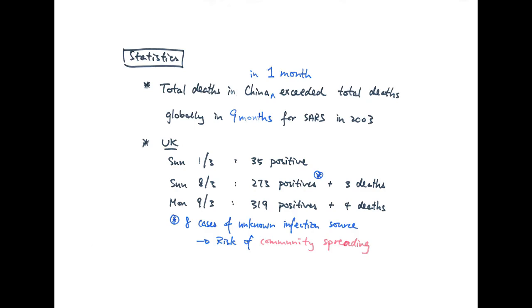Eight of the cases have unknown infection sources, which means that the government cannot trace where these people have contracted the virus from. This means we already have a risk of community spreading, meaning the virus is already circulating among society. You can probably expect the numbers to rise exponentially if that's the case, which is technically what's happening already right now.